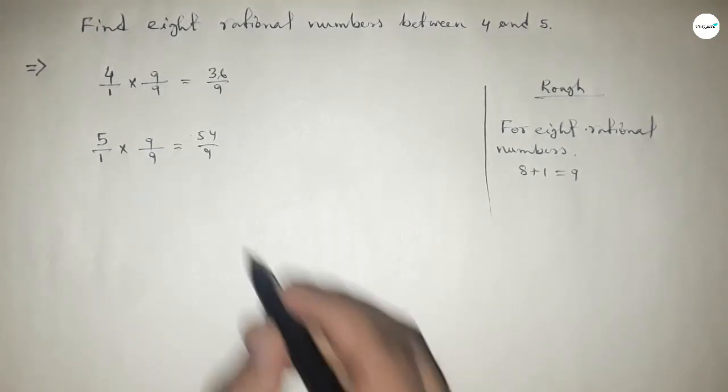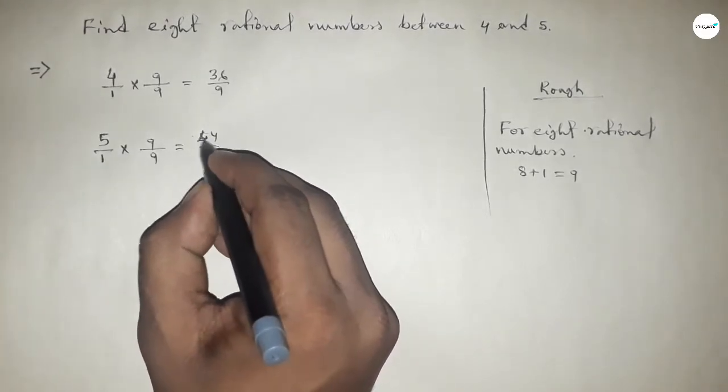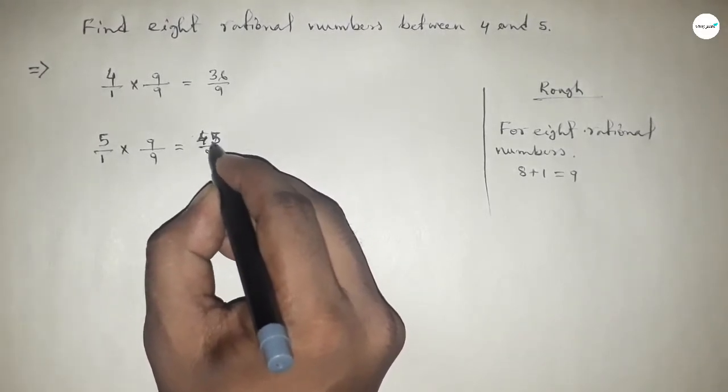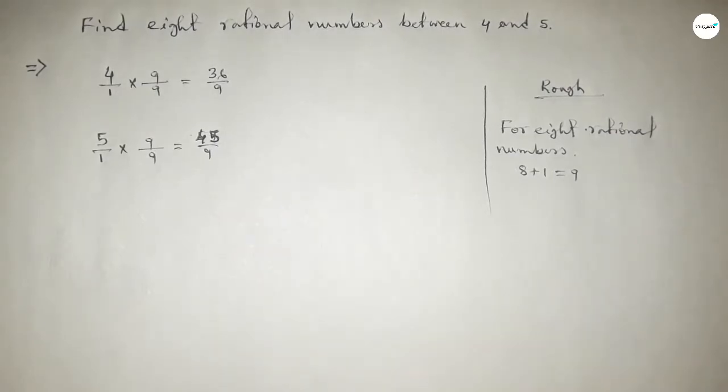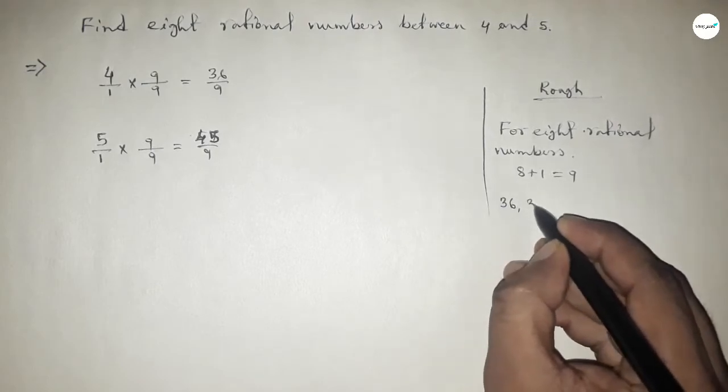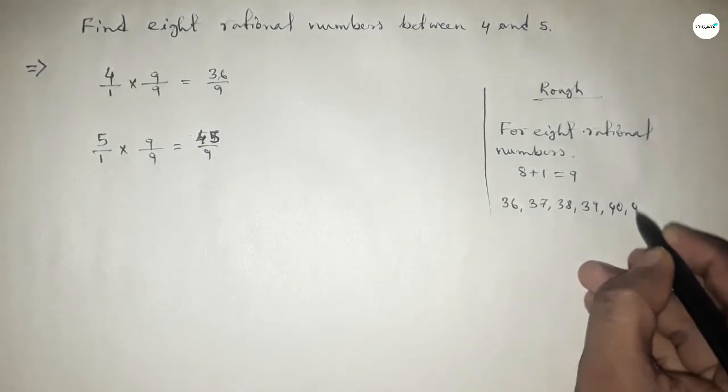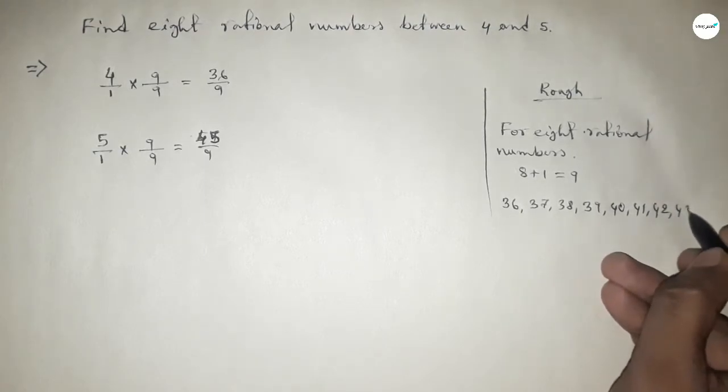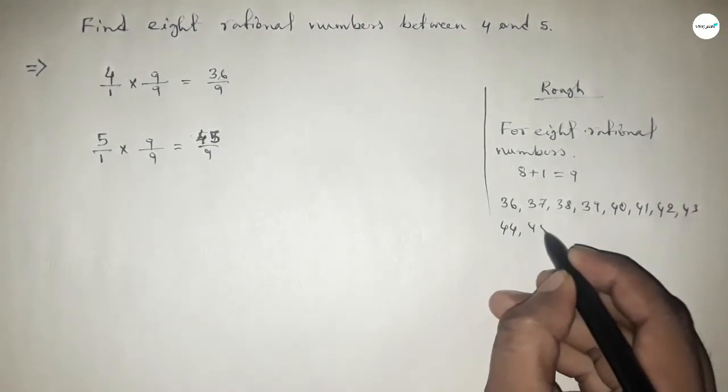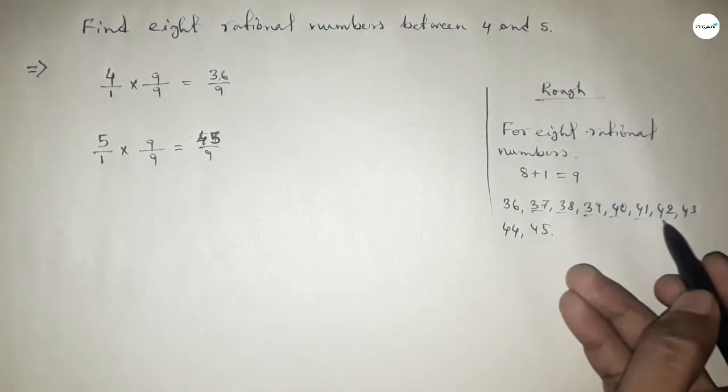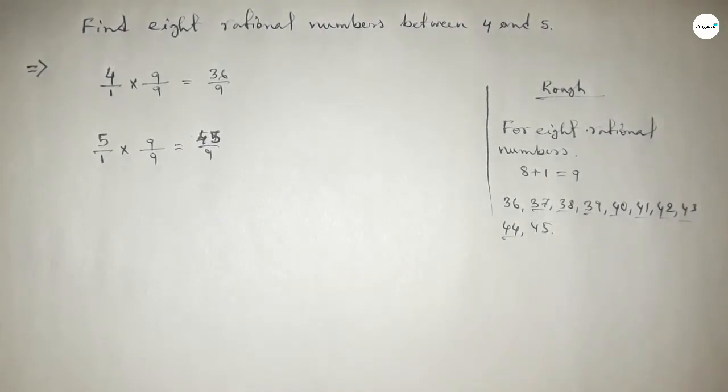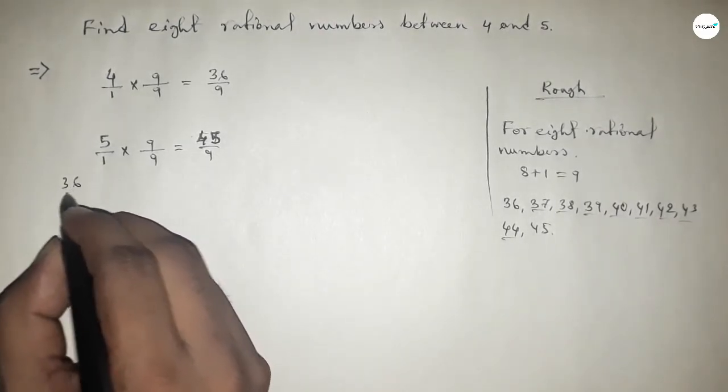Now between 36 to 45 we can find eight natural numbers, and by these natural numbers we can form eight rational numbers. So now here write down all the rational numbers.